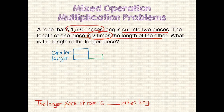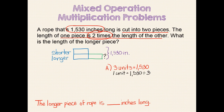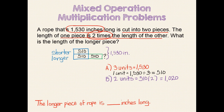The rope was 1,530 inches long before it was cut, so we should bracket the model and show that. Since we are asked the length of the longer piece, our question mark goes here. We have a total of three units which equals 1,530, so one unit equals 1,530 divided by 3, which equals 510. If each unit represents 510 inches, then the longer piece of rope, which is two units, equals 510 times 2, or 1,020. The longer piece of rope is 1,020 inches long.